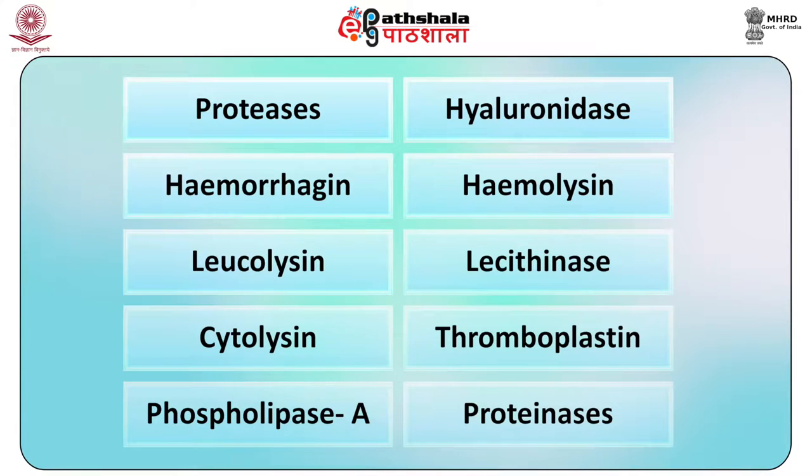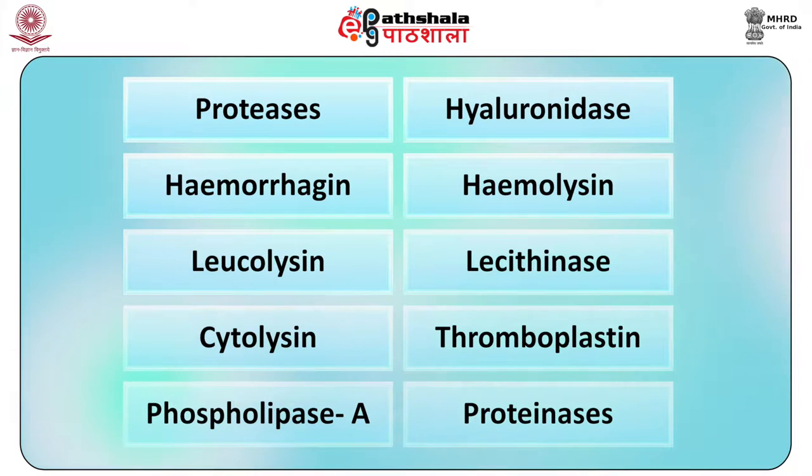The viper venom is predominantly hemolytic and hemotoxic. It causes lysis of red cells and other tissue cells and coagulation disorders, bringing about coagulation of the blood and clotting of the pulmonary arteries. There will be hemorrhage from the site of bite associated with necrosis of the renal tubules, and convulsions from intracerebral hemorrhage. It consists of proteases, hyaluronidase, hemolysin, leucolysin, lecithinase, cytolysin, thromboplastin, phospholipase A and proteinases.